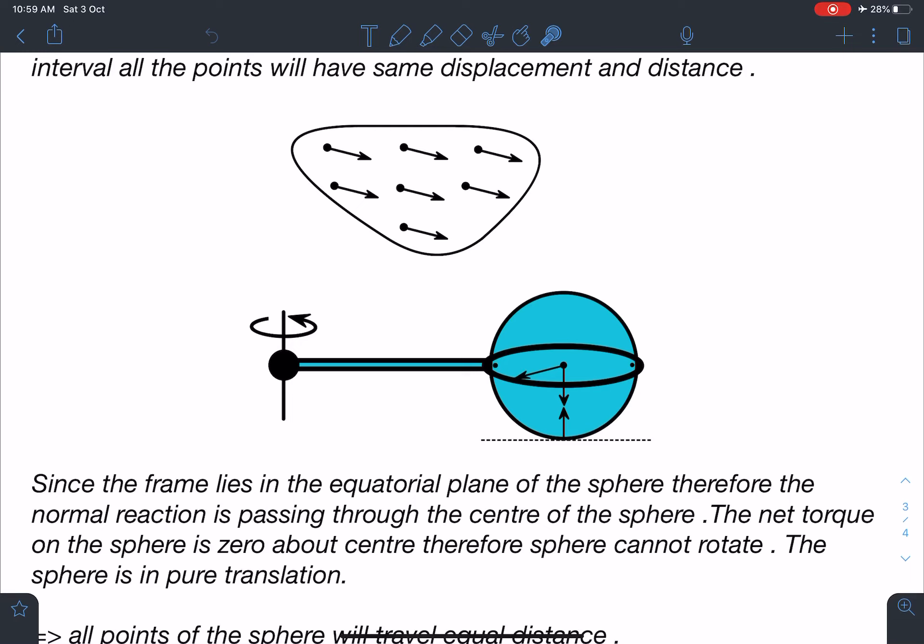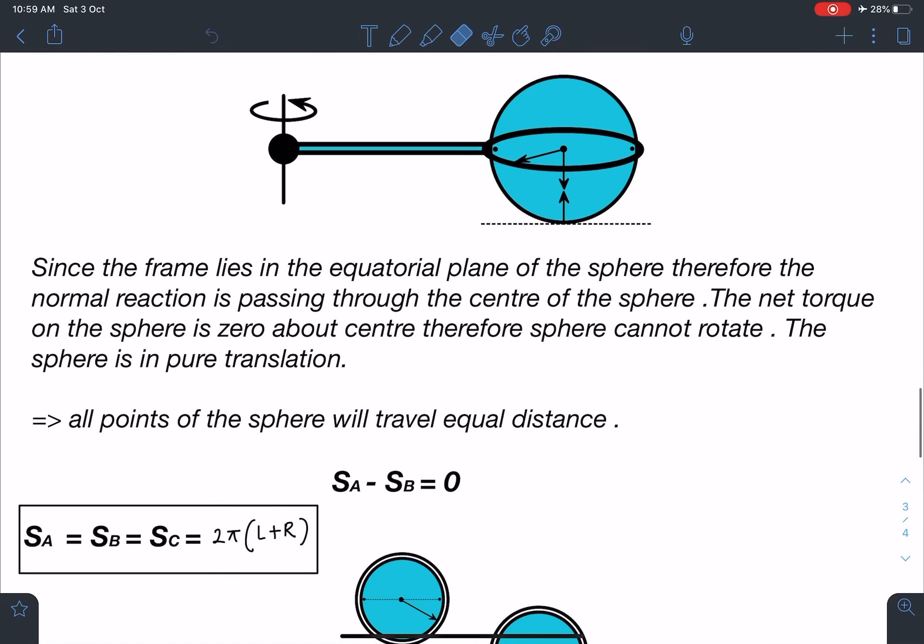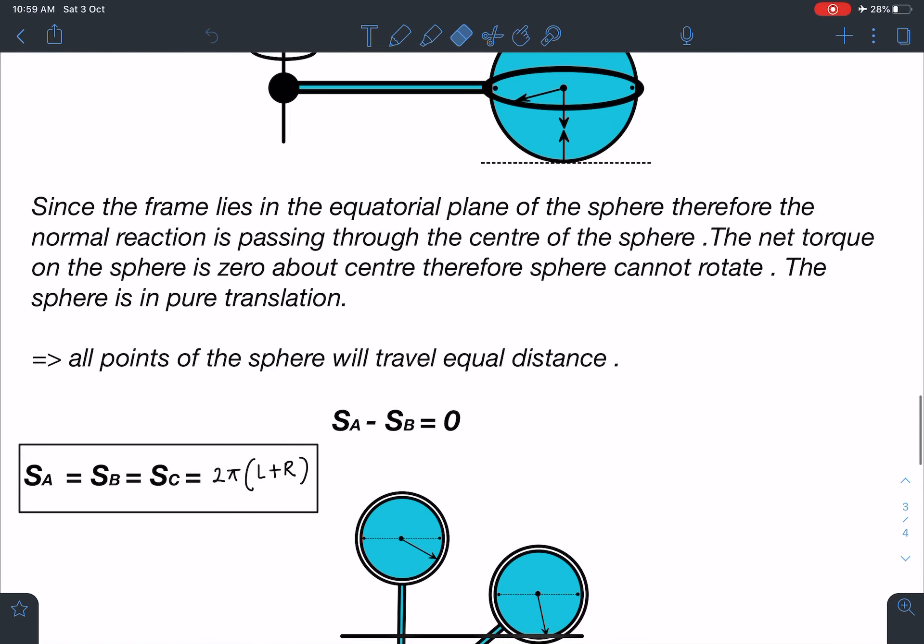So net torque on the sphere will be zero and if net torque is zero, sphere is not going to rotate. So we can say it is nothing but pure translation.